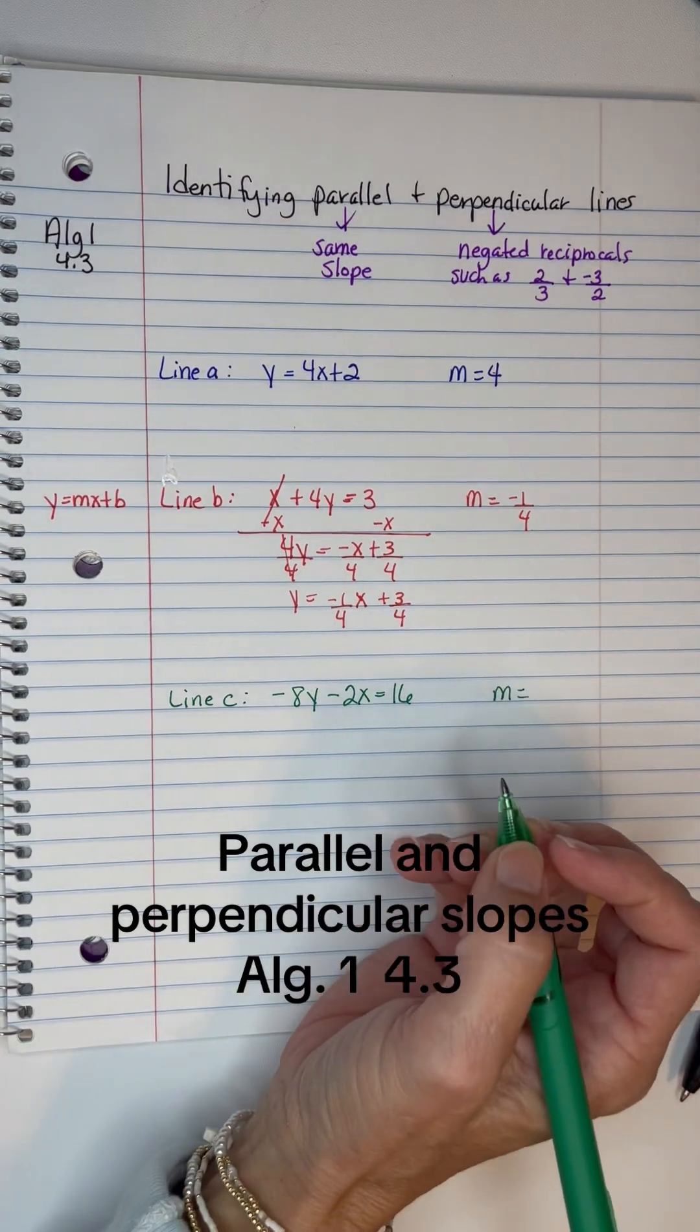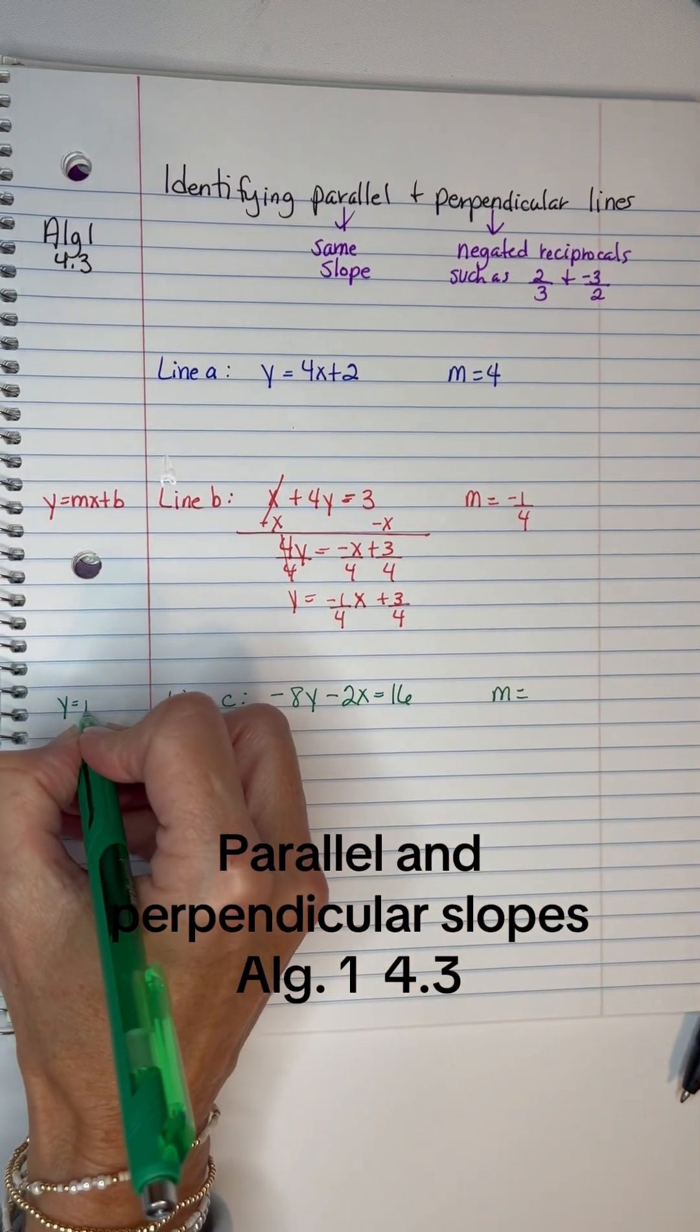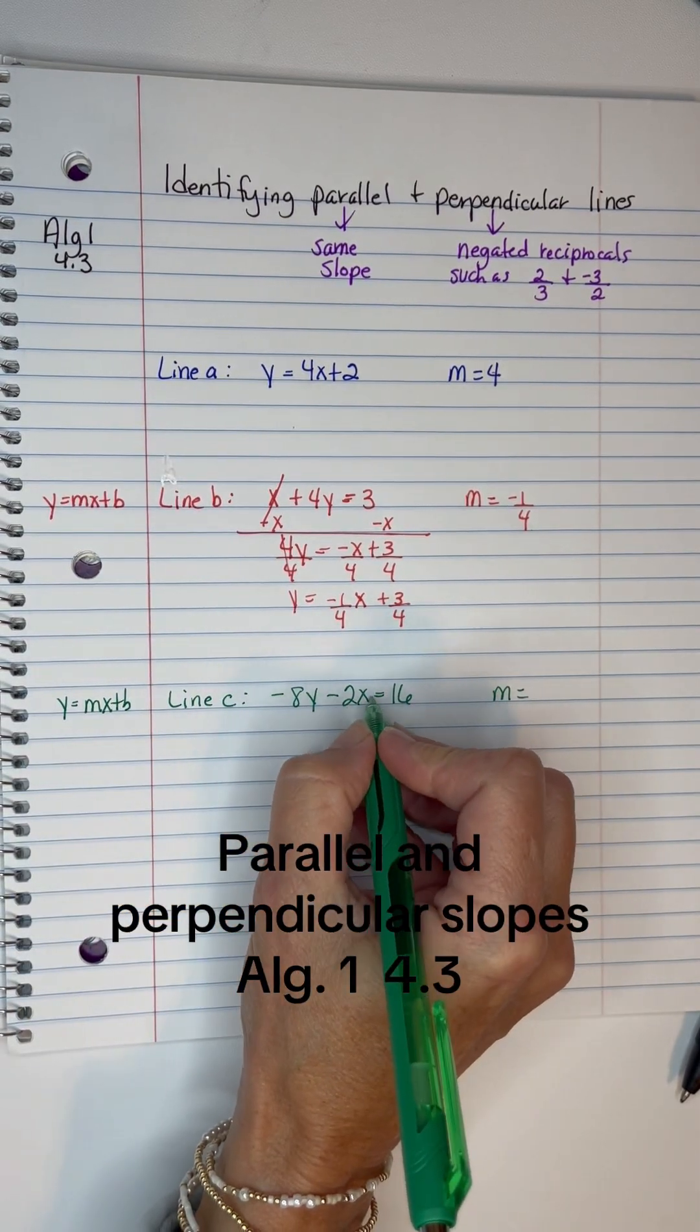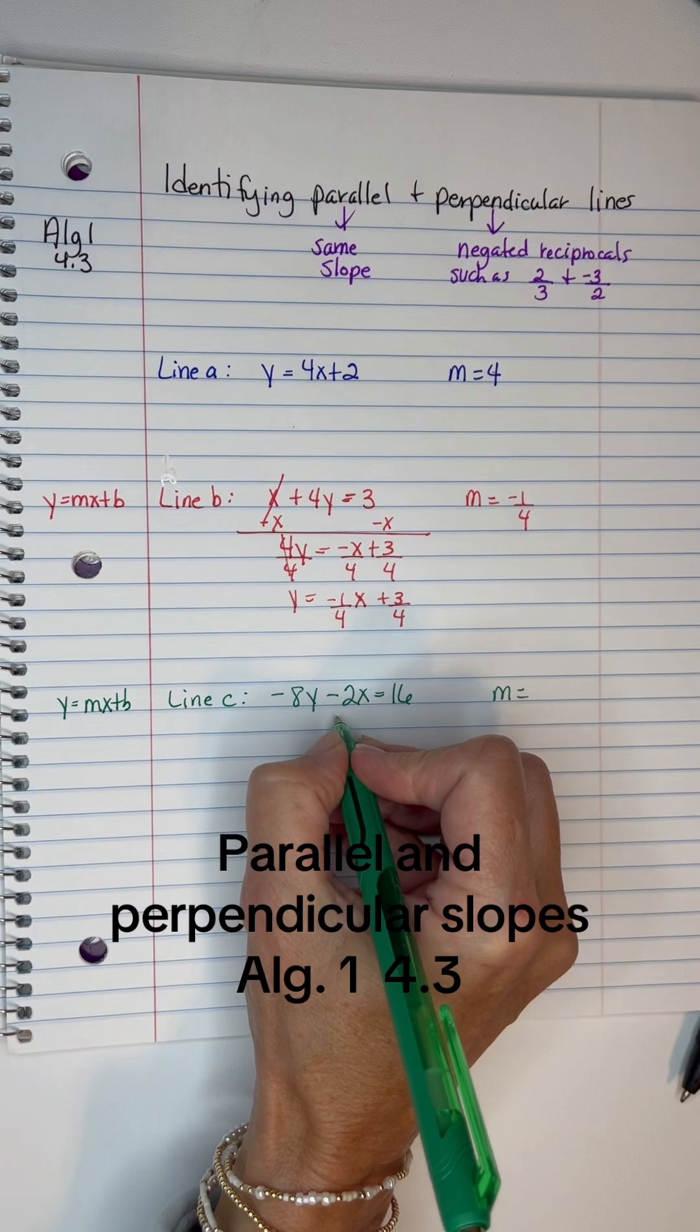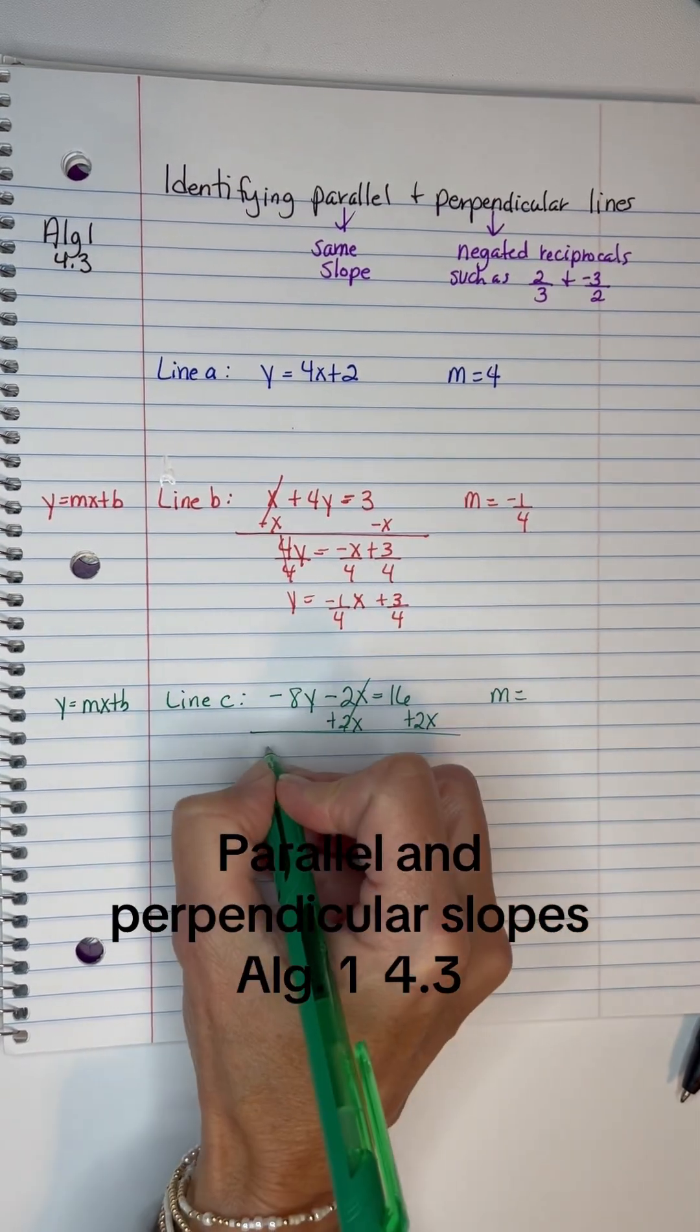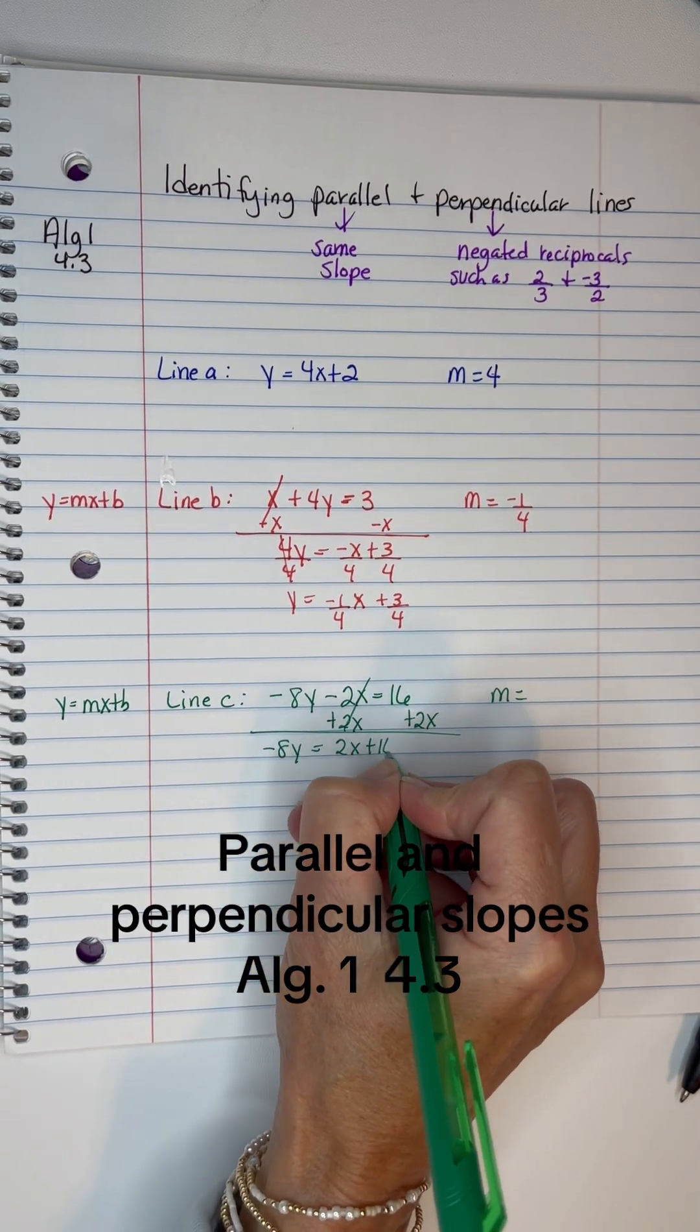For the last one, we need to make it y = mx + b. So I'm going to get rid of the -2x by adding 2x to both sides. So I have -8y = 2x + 16.